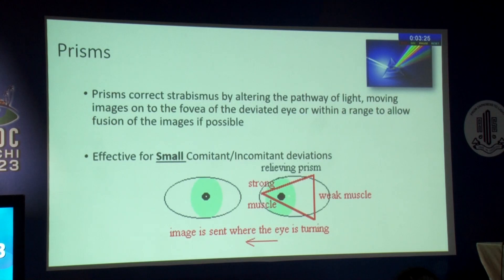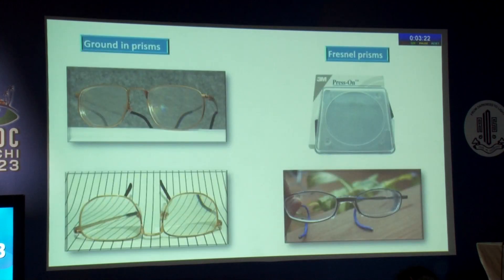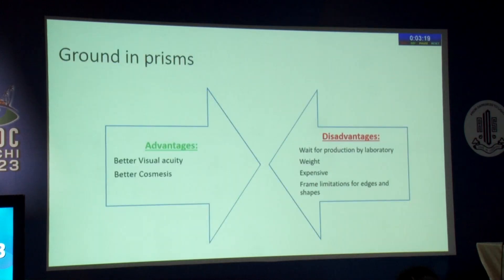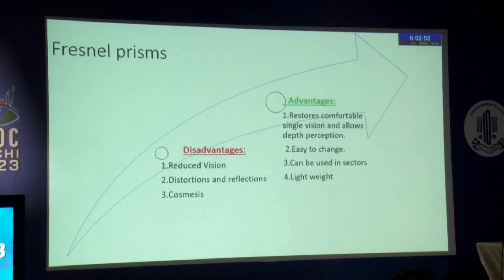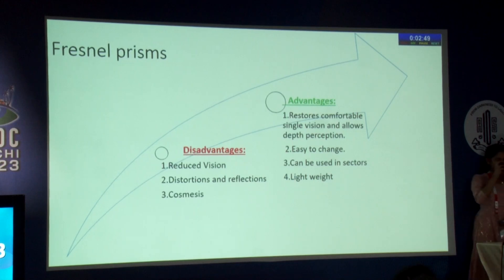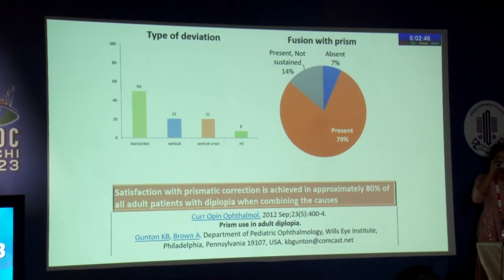Prisms are very effective in most patients but only for small comitant and incomitant deviations. There are two types: ground-in prisms and Fresnel prisms. Ground-in prisms offer better visual acuity and cosmesis but have disadvantages including waiting time for manufacturing, weight, expense, and frame limitations. Fresnel prisms have advantages of restoring comfortable single vision, good depth perception, easy to change, usable in sectors, and lightweight; but disadvantages include reduced vision, distortions, reflections, and cosmetic appearance. Fusion with prisms has been found to be very effective.